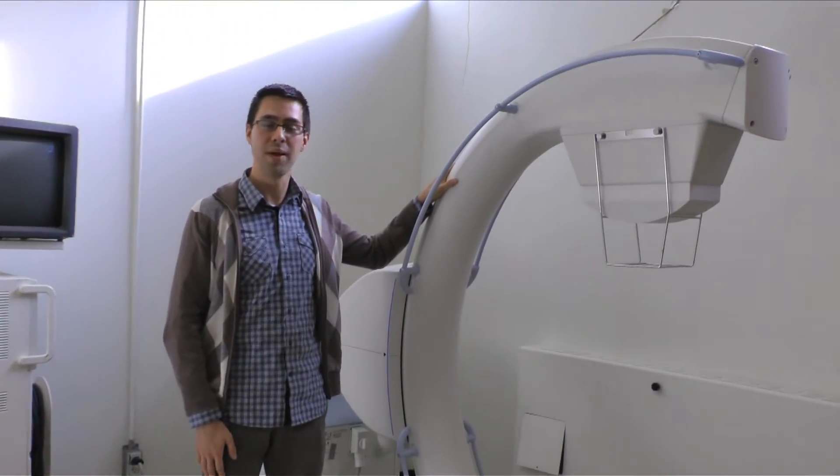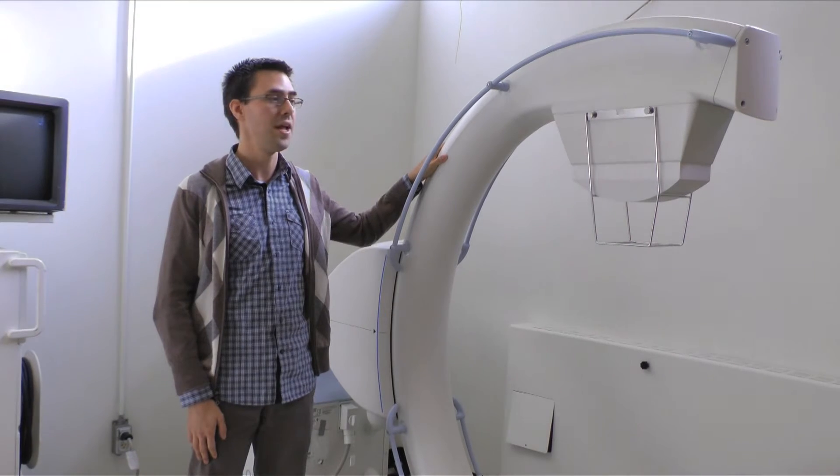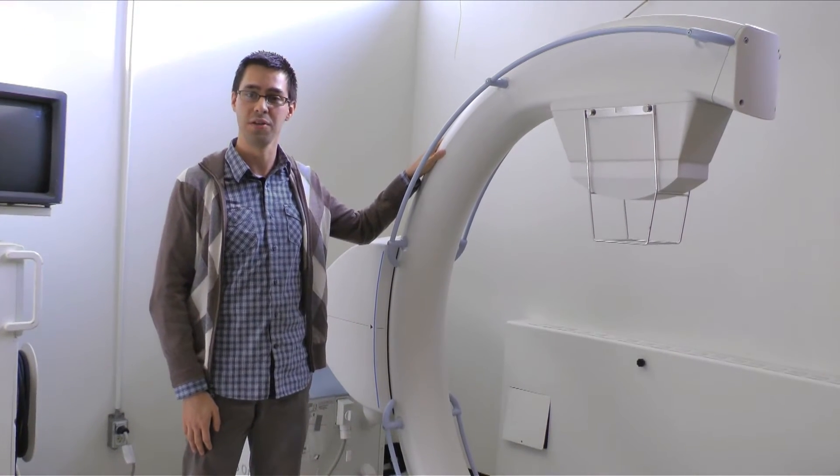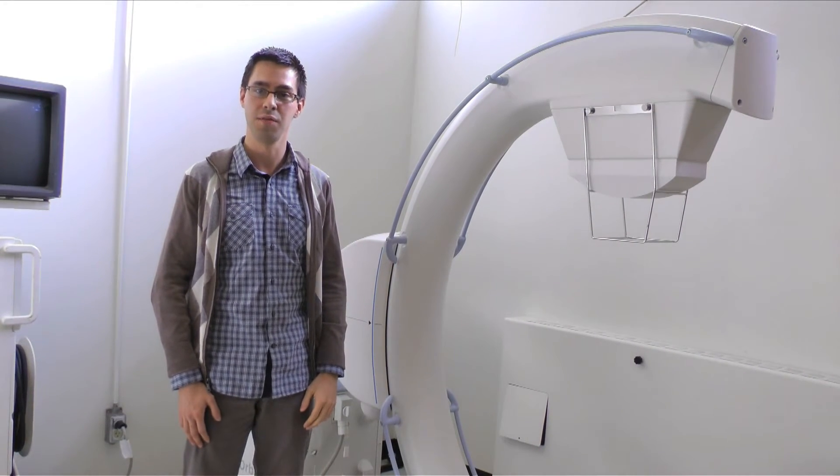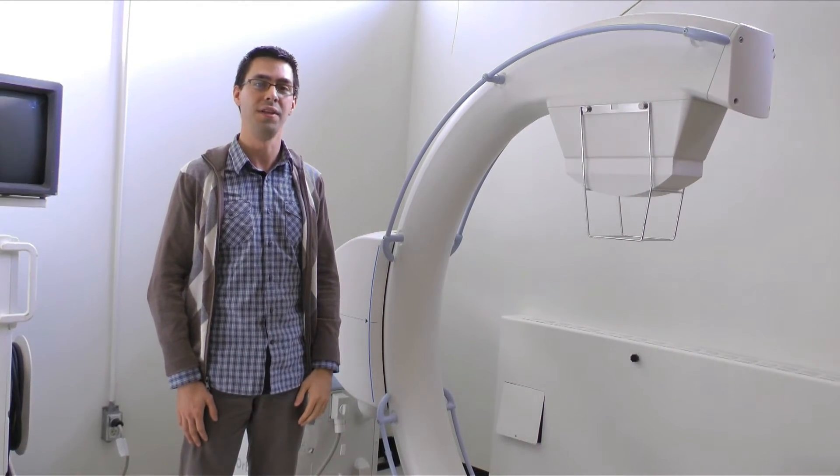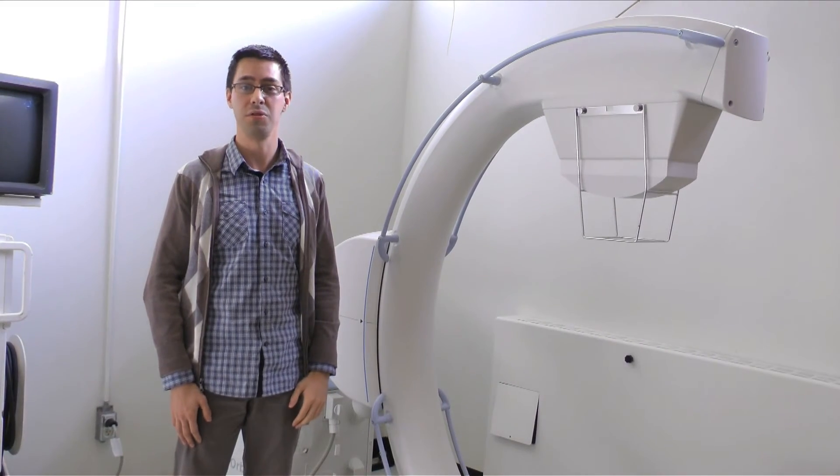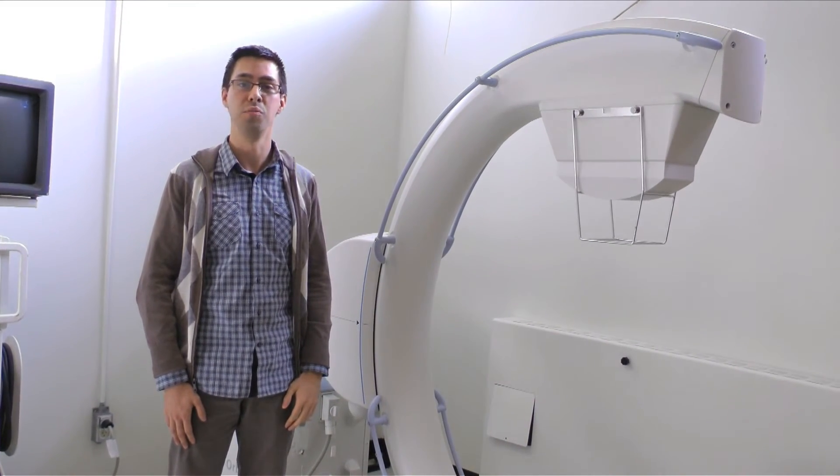So what we have here is a C-ARM X-ray machine. It allows us to take X-ray images of a patient. What we're going to be using it for is to take 3D images of a patient, and we can overlay the position of the radioactive sources on these images. This allows us to direct the radiation beam on the moving tumor.